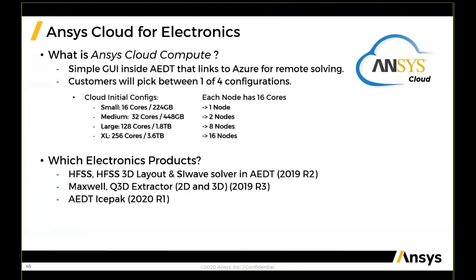Each of these configurations has 1, 2, 8, or 16 nodes where each node has 16 cores, with different amounts of RAM for each configuration. HFSS has been on cloud since 2019 R2. Late last year, Maxwell and Q3D Extractor were added. And with 2020 R1, IcePak EDT is also part of the ANSYS cloud solution.